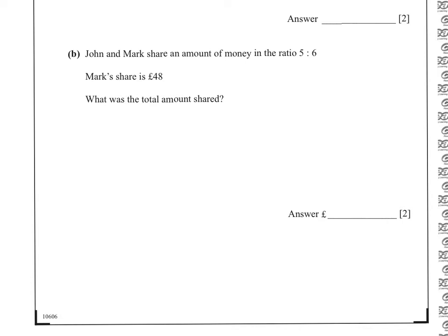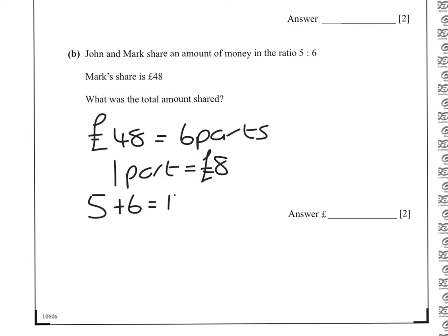This is part B. Mark's share is 48 pounds, and 48 pounds is 6 parts. So if we divide by 6, we get that 1 part is 48 divided by 6, which is 8 pounds. In total, we want 11 parts. So the total amount of money is 11 times 8, which is 88.